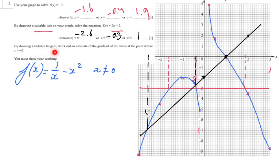Thirdly, by drawing a suitable tangent, work out an estimate of the gradient of the curve at the point where x is minus 2. Now, what is a tangent? A tangent is a touchline. It's a line that just touches the graph. It doesn't cut the graph, or it doesn't miss the graph. It just touches the graph at a particular point, at point x minus 2.